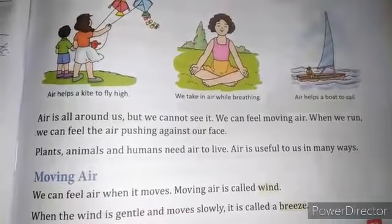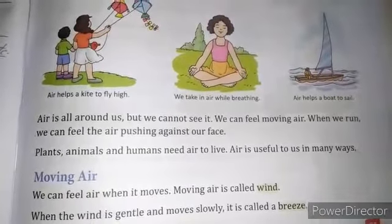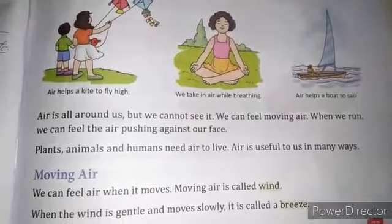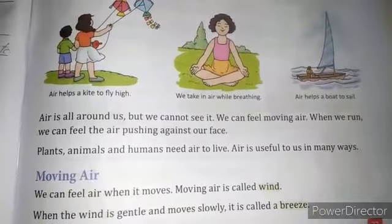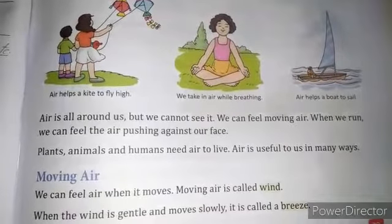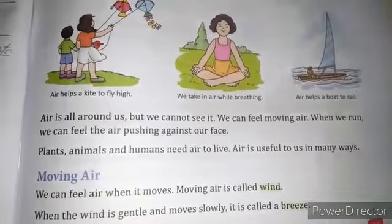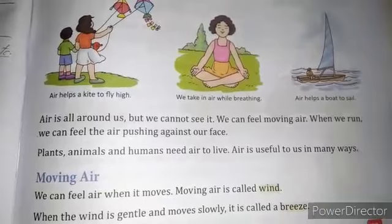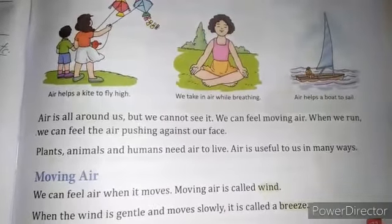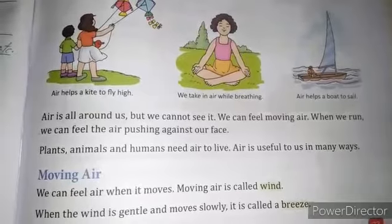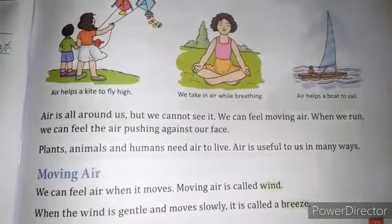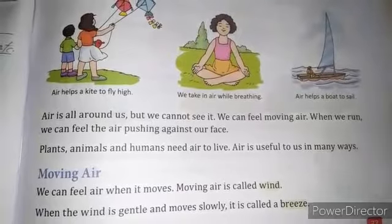The sail is made of white cloth, which helps the boat to cut through the water and move in the forward direction. The air gives pressure to the boat, and very smoothly the ship cuts the water and moves forward.